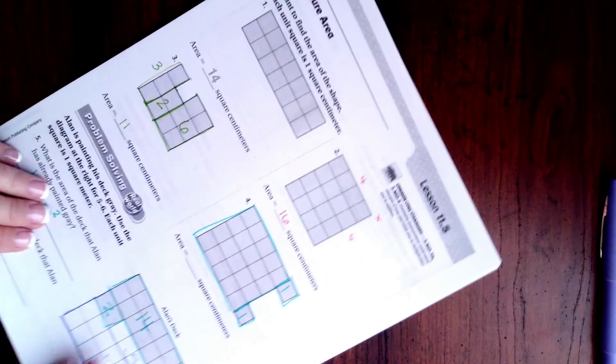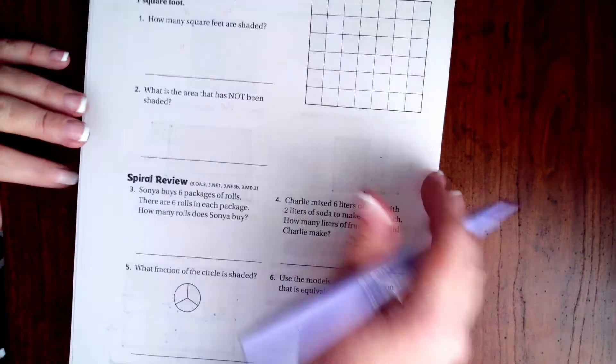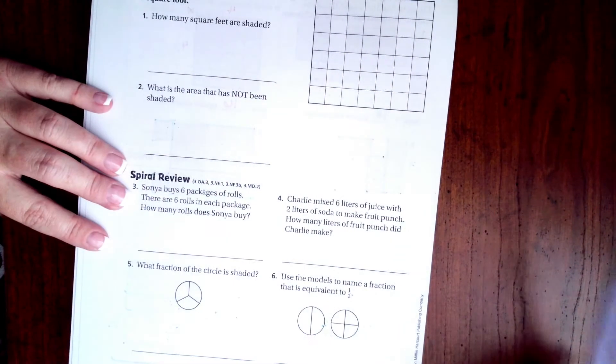All right, guys. So we're going to flip over onto the back, where you guys are going to do the lesson check, just like always. And, which is good, because you can barely see it on there. And we're going to go down and do this spiral review.